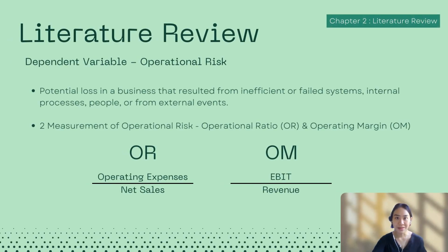Moving on to the literature review, starting with the dependent variable, which is operational risk — defined as the potential loss in a business resulting from inefficient or failed systems, internal processes, people, or external events. The two measurements of operational risk in this study are operational ratio and operating margin, and the formulas for these two ratios are as follows.